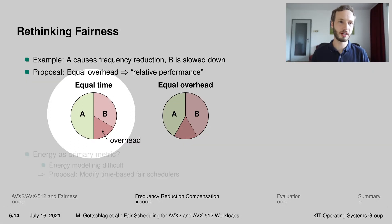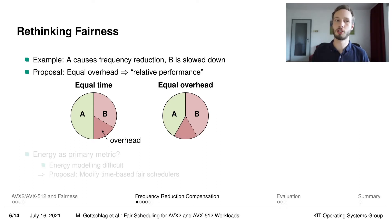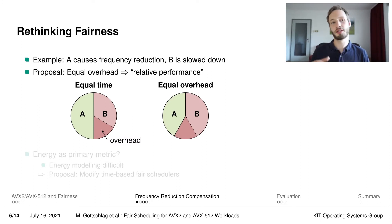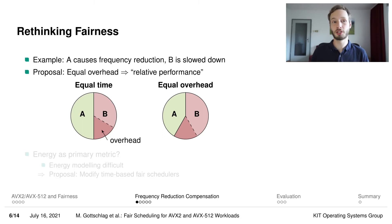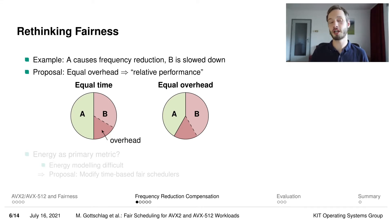The left part of the figure shows the situation from the last slide, where task A causes a frequency reduction whereas task B is affected by the frequency reduction overhead. We propose reinstating this intuitive definition of fairness where all tasks experience identical relative CPU performance, which in this case can be achieved by just giving task B slightly more CPU time, because then even though the frequency reduction overhead was completely occurring within the time slices of task B, both tasks would actually be equally affected by the overhead.